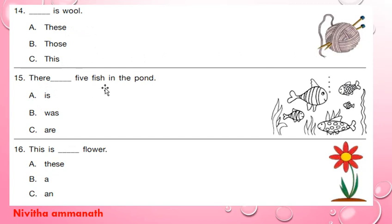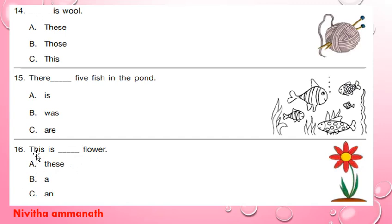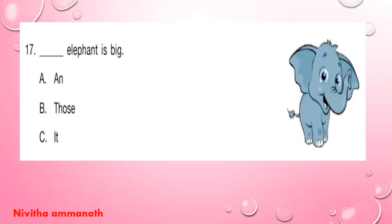There dash five fish in the pond — there is, was, are. There are five fish in the pond. Fish plural is fish. Next, this is dash flower — this is a flower; F is not a vowel, it is a consonant, so 16B is the correct option. Dash elephant is big — E is a vowel, so an elephant is big.